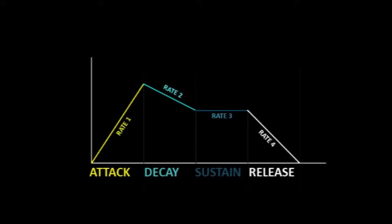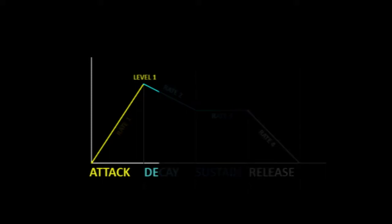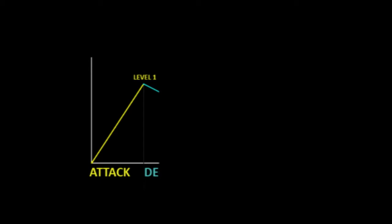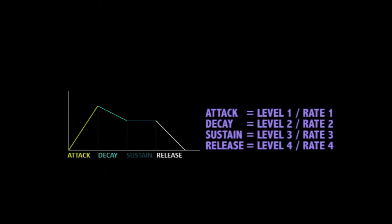Looking at the attack region, we can set the height of level 1, and by adjusting rate 1, we control the speed it takes to reach that point. The same goes for all of the other regions in their corresponding level and rate controls, as you can see above.